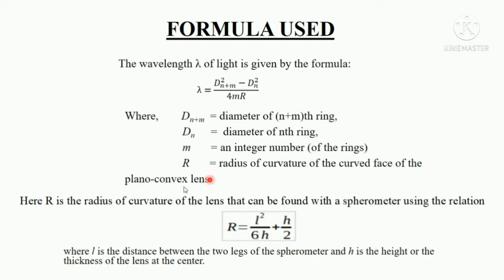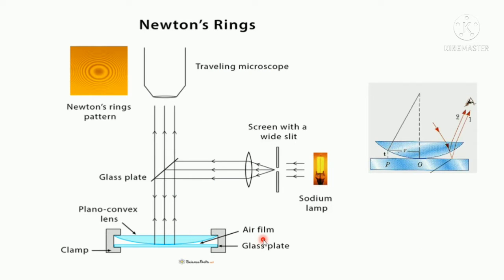R is the radius of curvature of plano convex lens which can be determined by a spherometer by relation R = l²/6h + h/2 where l is the distance between the two legs of the spherometer and h is the height of the convex part center of the convex lens.